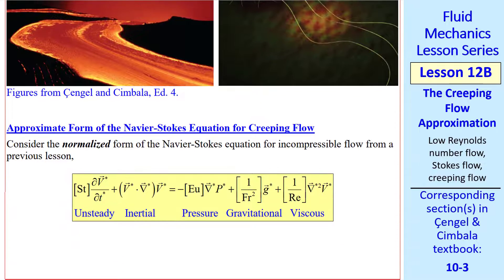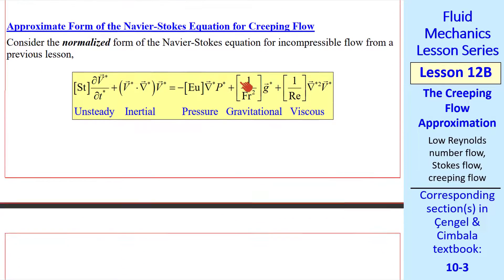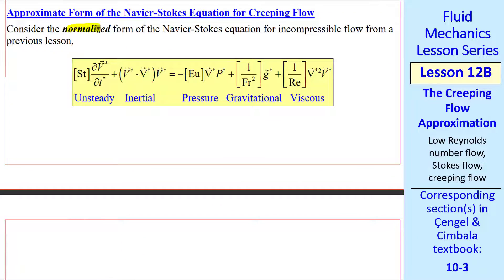Now let's look at the approximate form of the Navier-Stokes equation for creeping flow. Here's our normalized form of the Navier-Stokes equation. We're talking about incompressible flow. And recall from a previous lesson that we had these five terms. Let's consider steady flow. So this first term goes away. And let's ignore gravitational effects. So this term goes away.